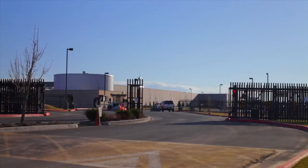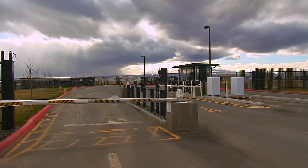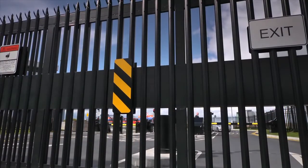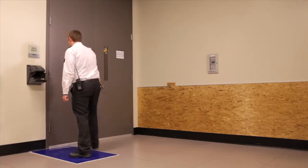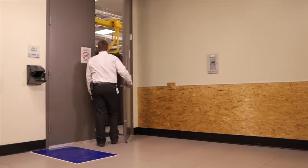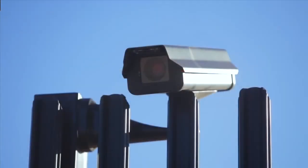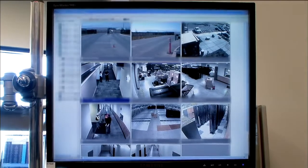Security at our data centers employs outer and inner perimeters with increasing security at each level, utilizing a combination of technology and traditional physical measures. We maintain hundreds of controls across multiple levels of operations. At the data centers, technical security elements include two-factor access control, badge readers, extensive camera monitoring, and integrated alarm systems.